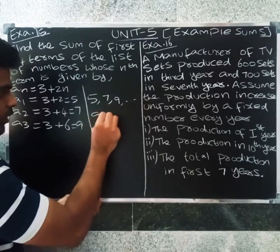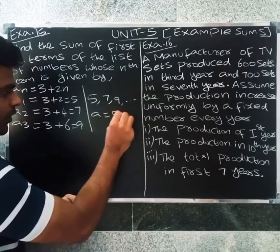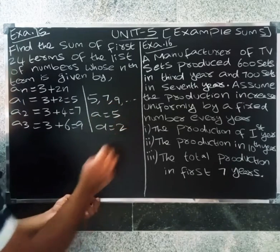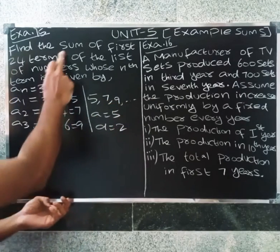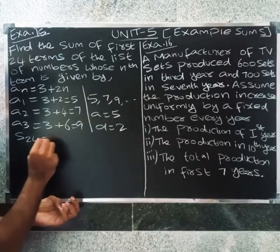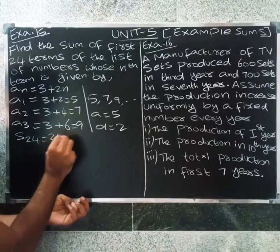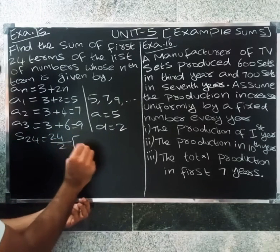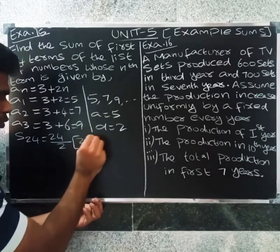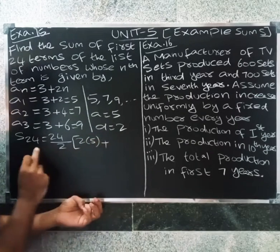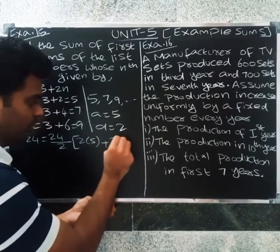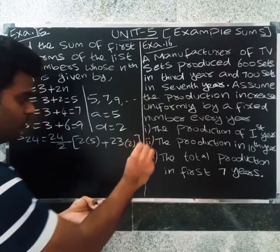So the sequence is 5, 7, 9. The first term a equals 5, and d equals 7 minus 5, which is 2. Now, to find the sum of the first 24 terms, we use the formula: Sn equal to n by 2 into 2a plus n minus 1 into d. Substituting: 24 minus 1 is 23, and d equals 2.